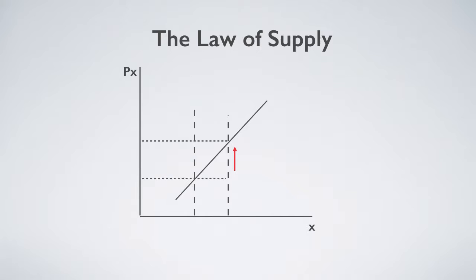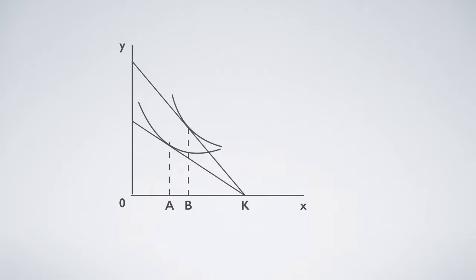When price rises, quantity supplied increases. To prove this law, they use utility. Suppose x is leisure, k the total time, for example 24 hours.